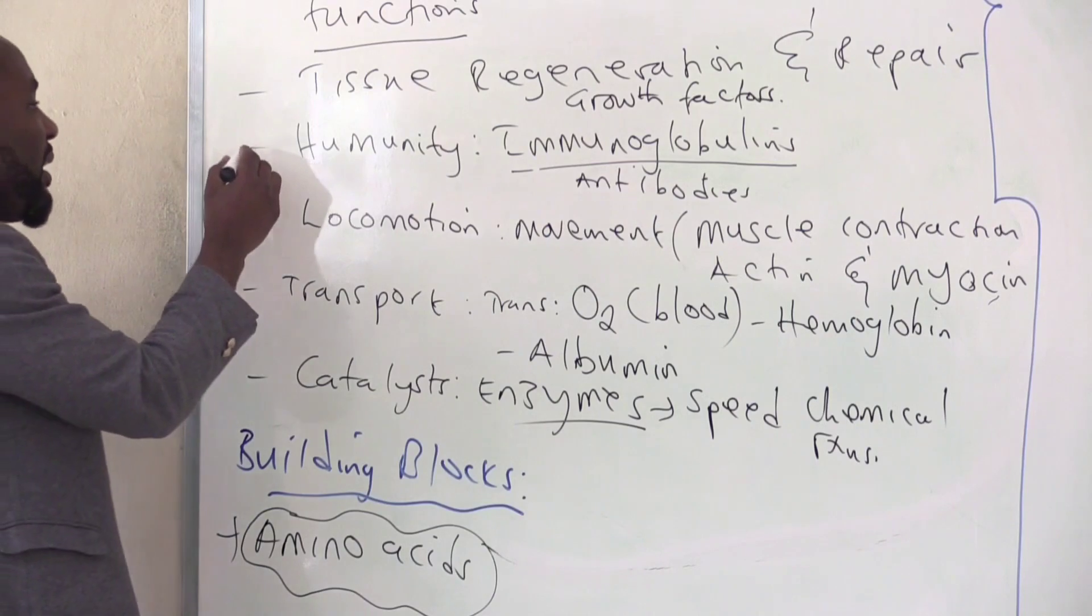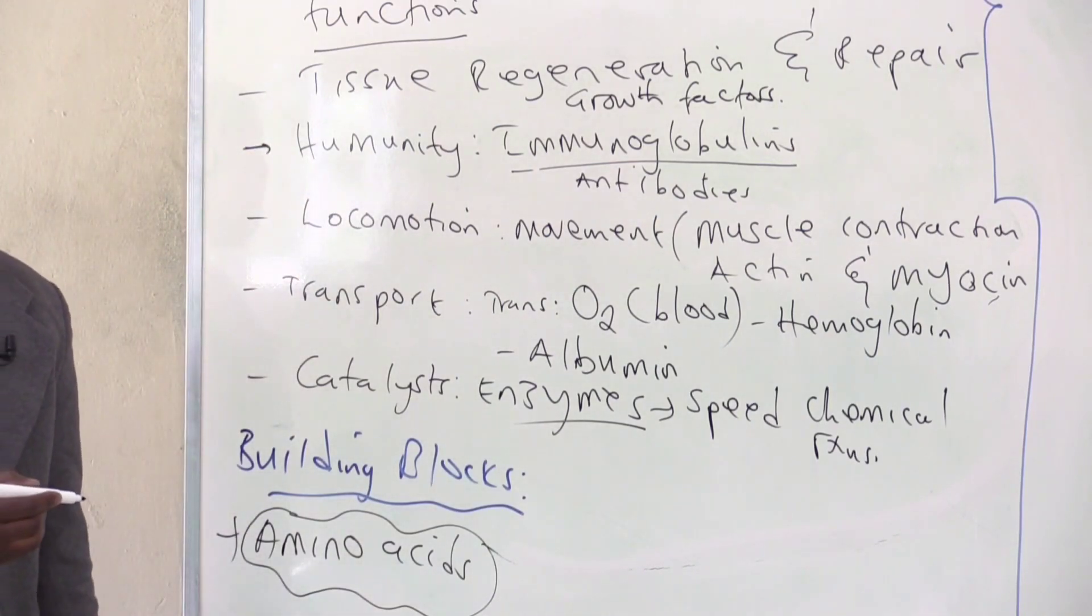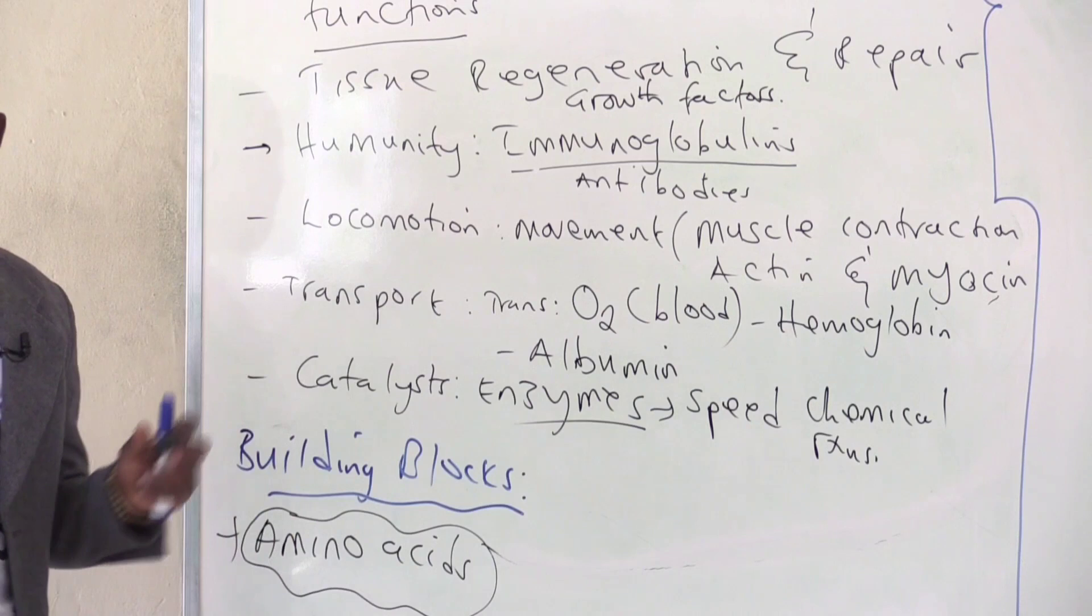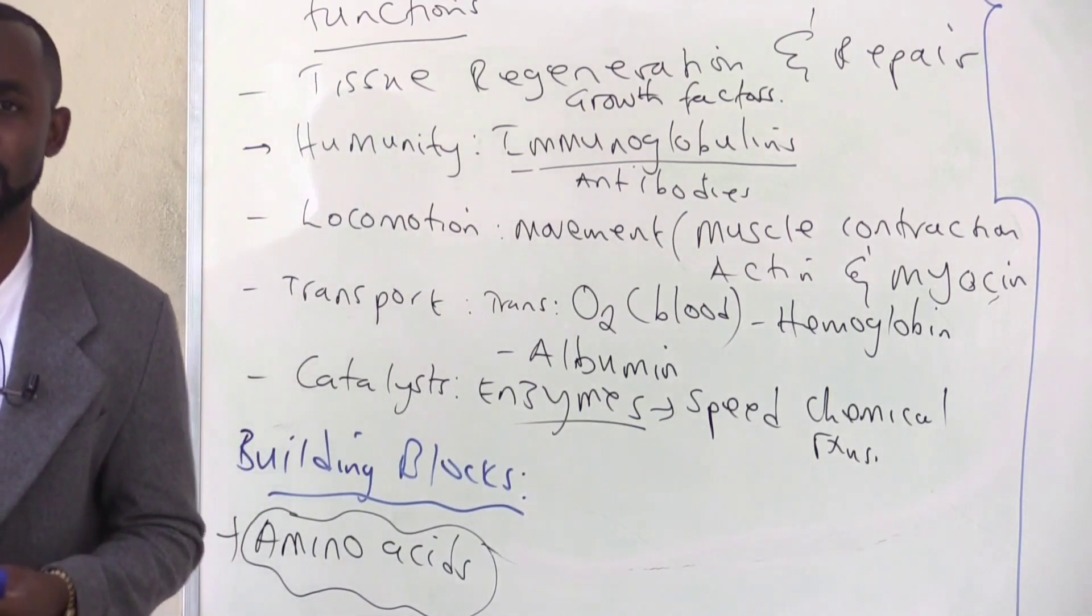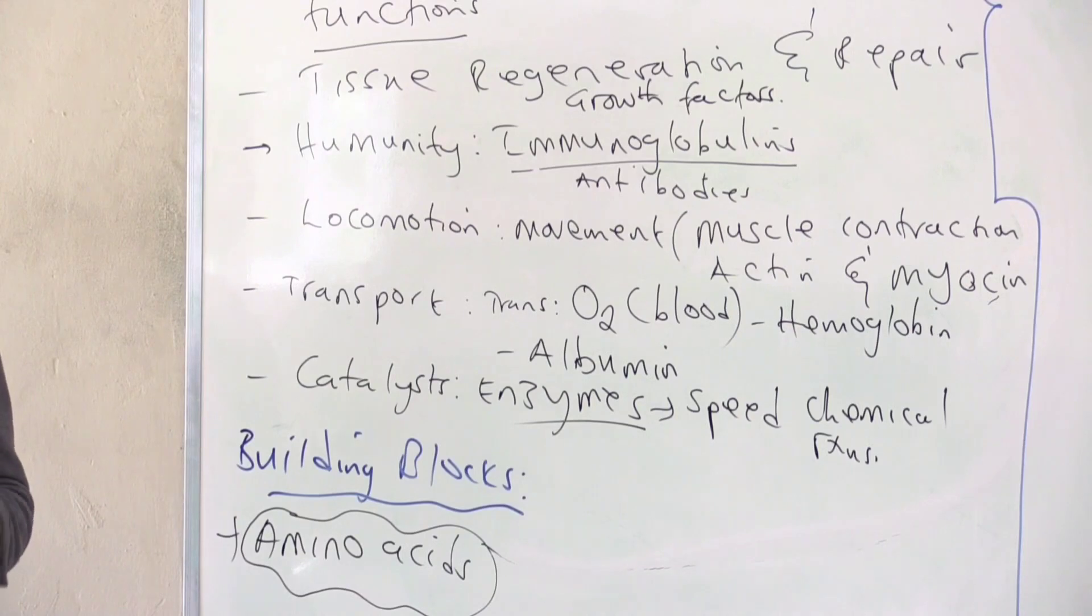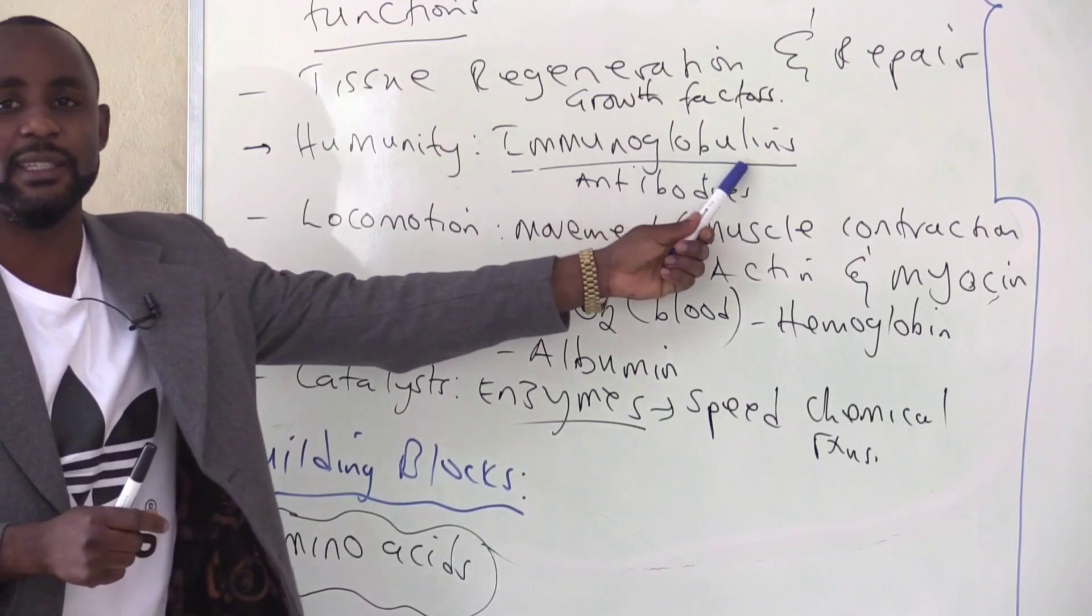The second one is that proteins help in immunity. Some proteins are very useful to protect us from toxins and infections. What are examples of those proteins? We normally call them immunoglobulins.